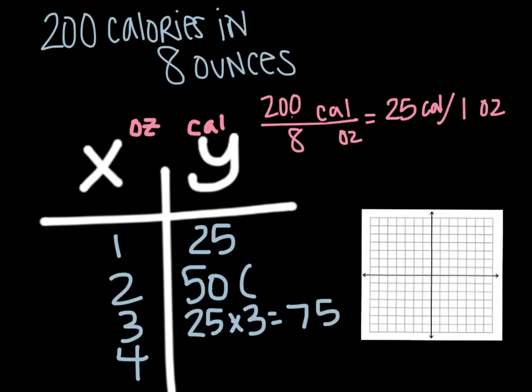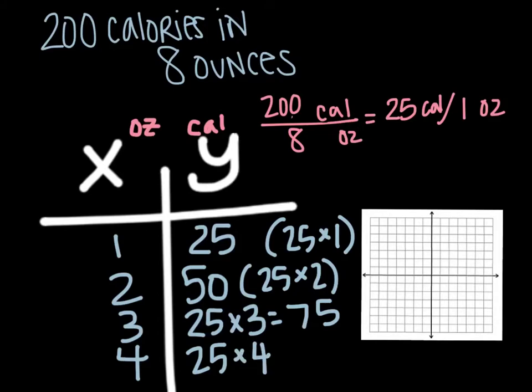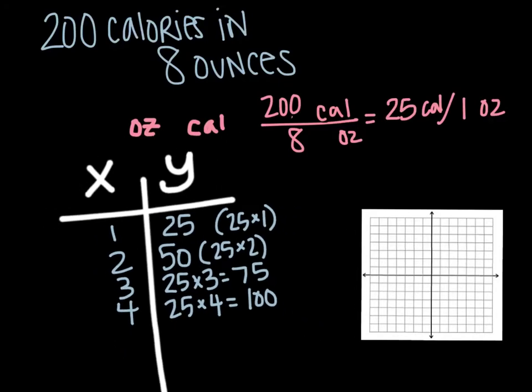Let's back up here. This one, 50 came from 25 times 2, and this one was 25 times 1. That's how we got those answers. And then 25 times 4 because 4 ounces will give me an answer of 100.